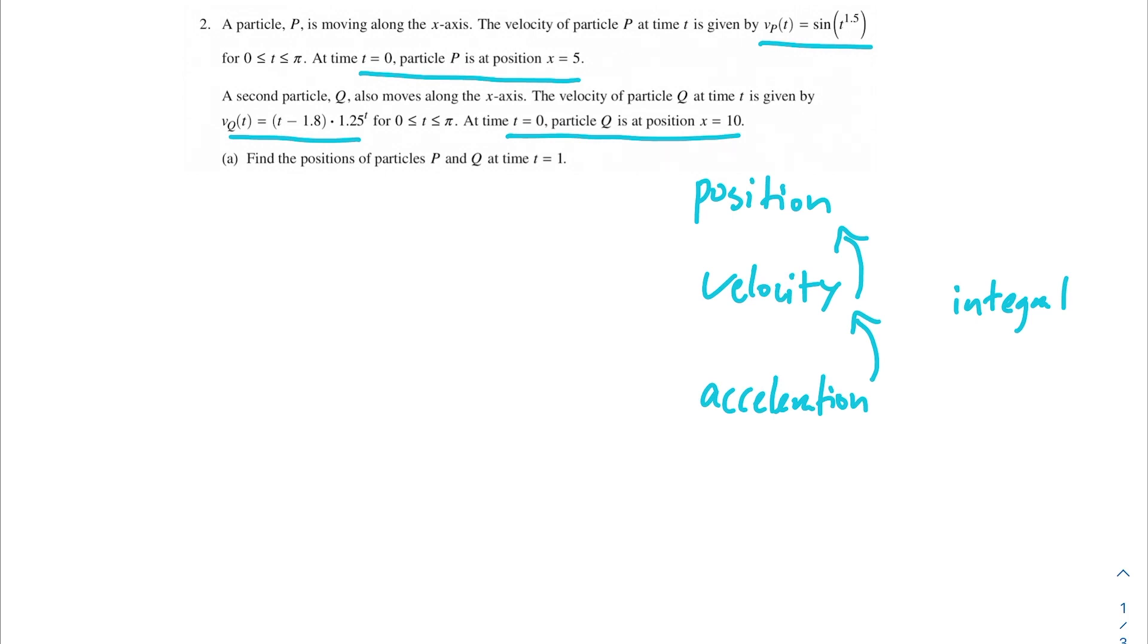So if our problem is asking us for the positions at time t equals 1, it seems like we're going to want to do an integral because all that we were given were these velocities. Lucky for us, it also tells us the position at time equals 0 for both particle P and Q. So if we wanted to find the position at time t equals 1, we would just need to take the position at t equals 0 and then add it to the integral from 0 to 1 of either P(t) or Q(t).